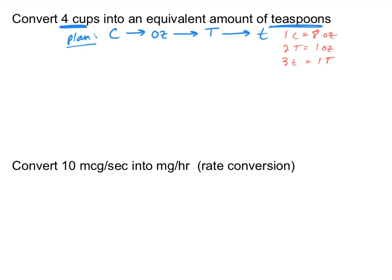With dimensional analysis, we start with what we want to convert — in this case, 4 cups. Since we're dealing with a single unit and not a rate, it's nice to write it as 4 over 1. Using the factor label method, if I want to cancel out cups, cups needs to be in the denominator of my conversion factor — because cups in my initial value is in the numerator, so to cancel it out I place cups in the denominator.